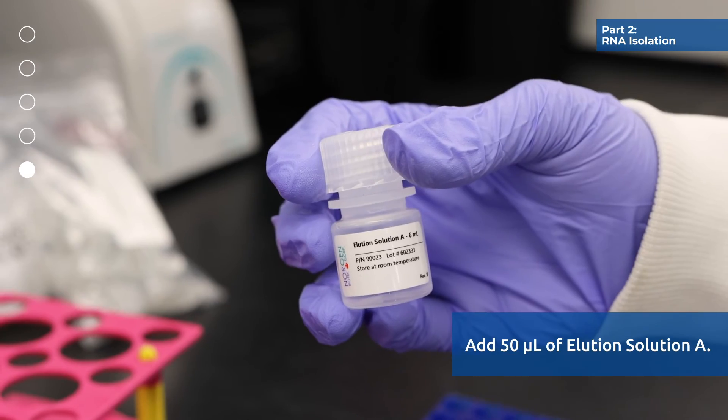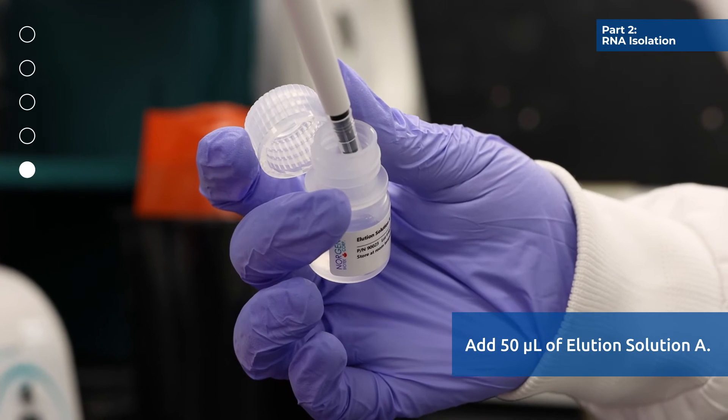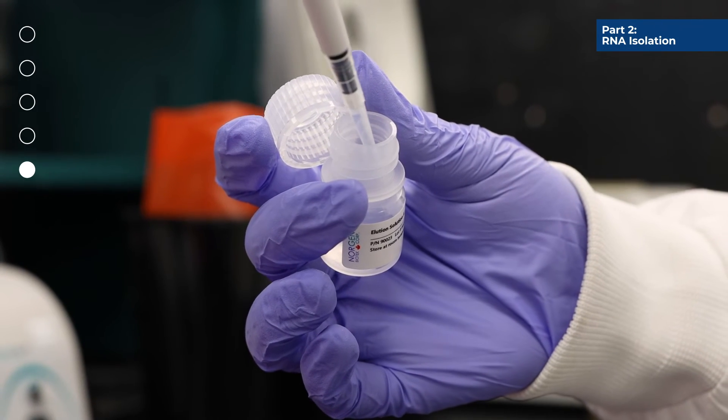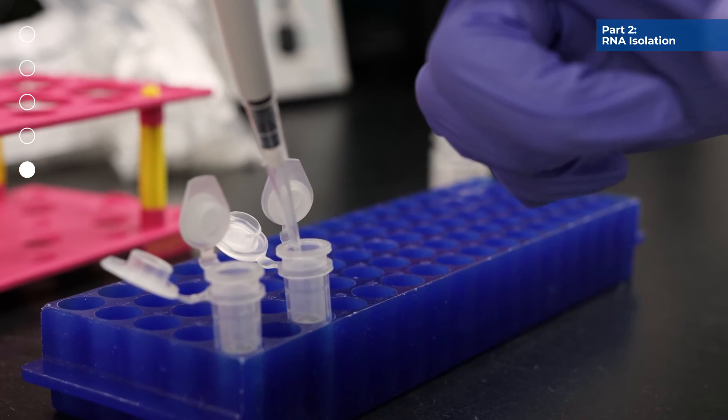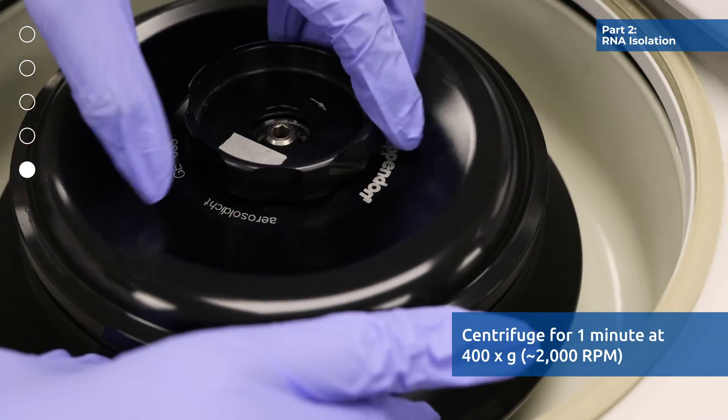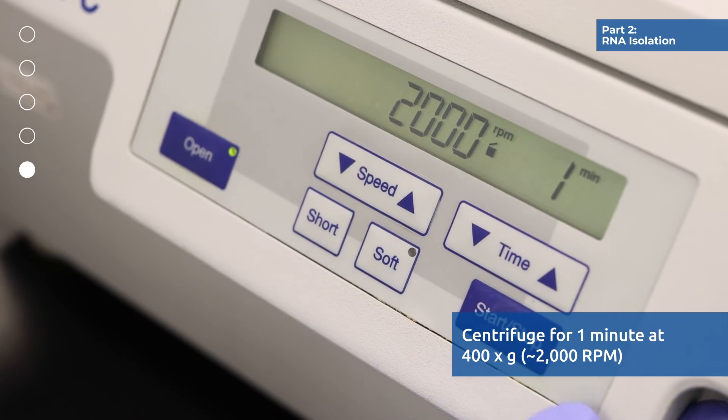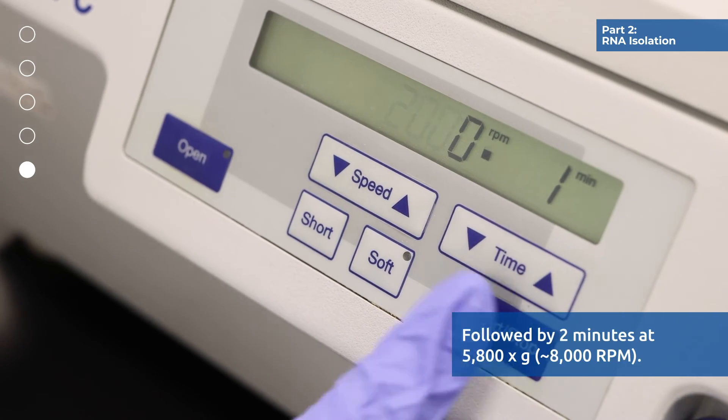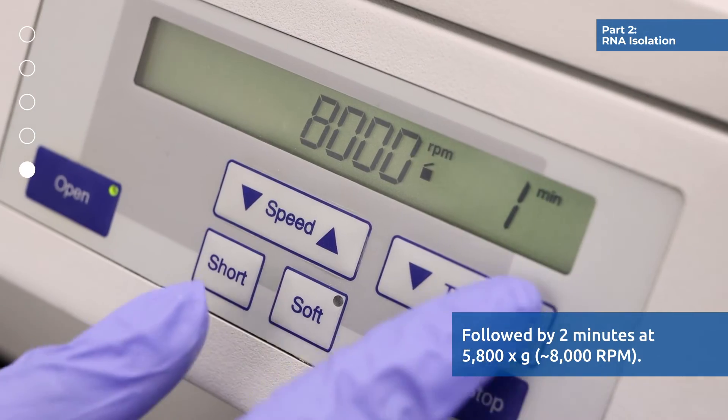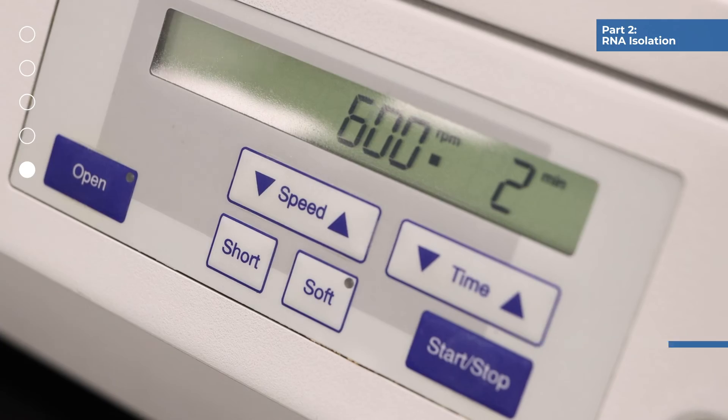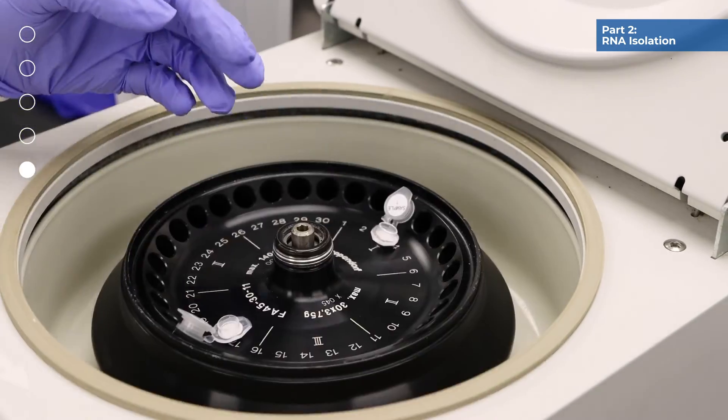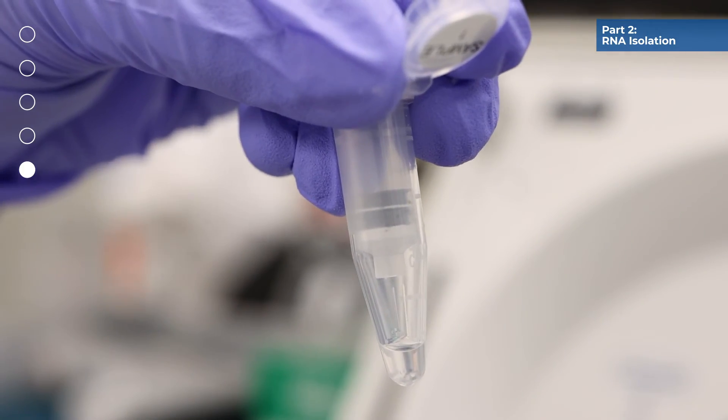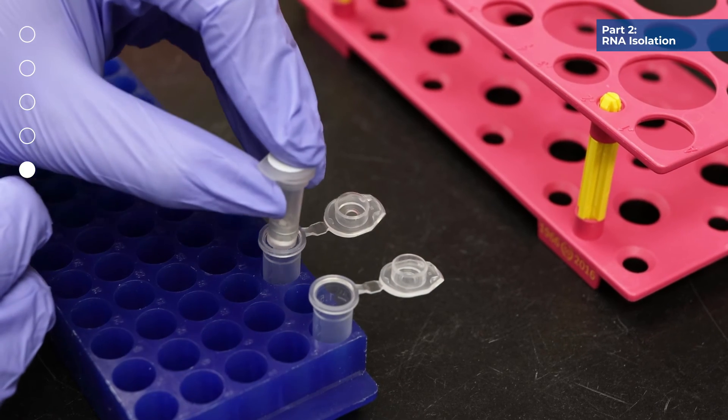Apply 50 microliters of elution solution A to the column and centrifuge for 1 minute at 2000 rpm, followed by 2 minutes at 8000 rpm. For maximum recovery, transfer the eluted buffer back to the column and let stand at room temperature for 2 minutes.